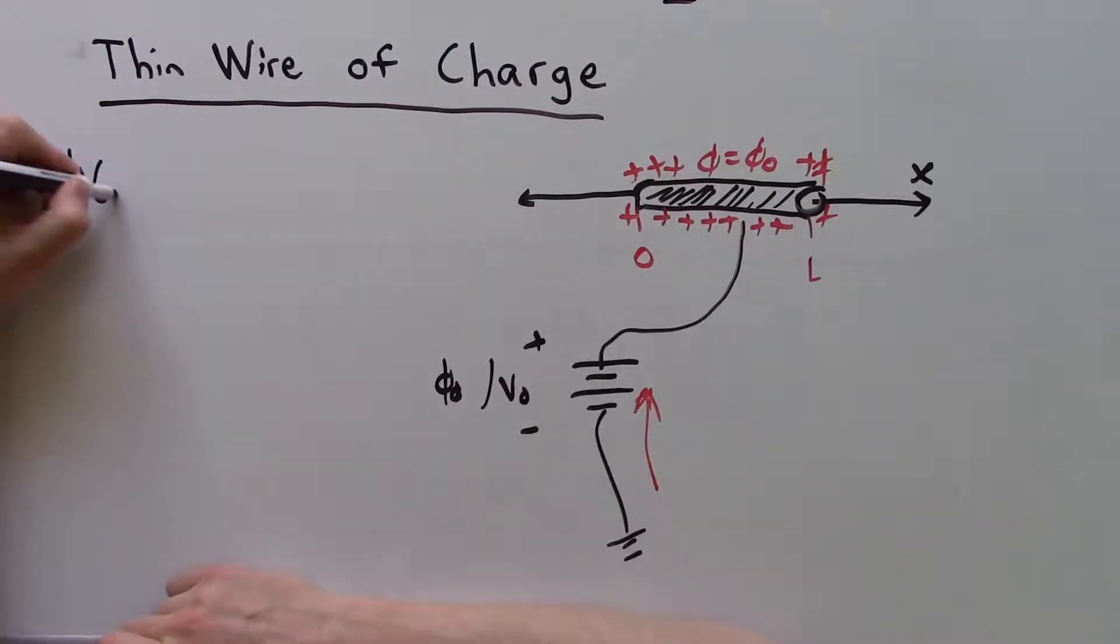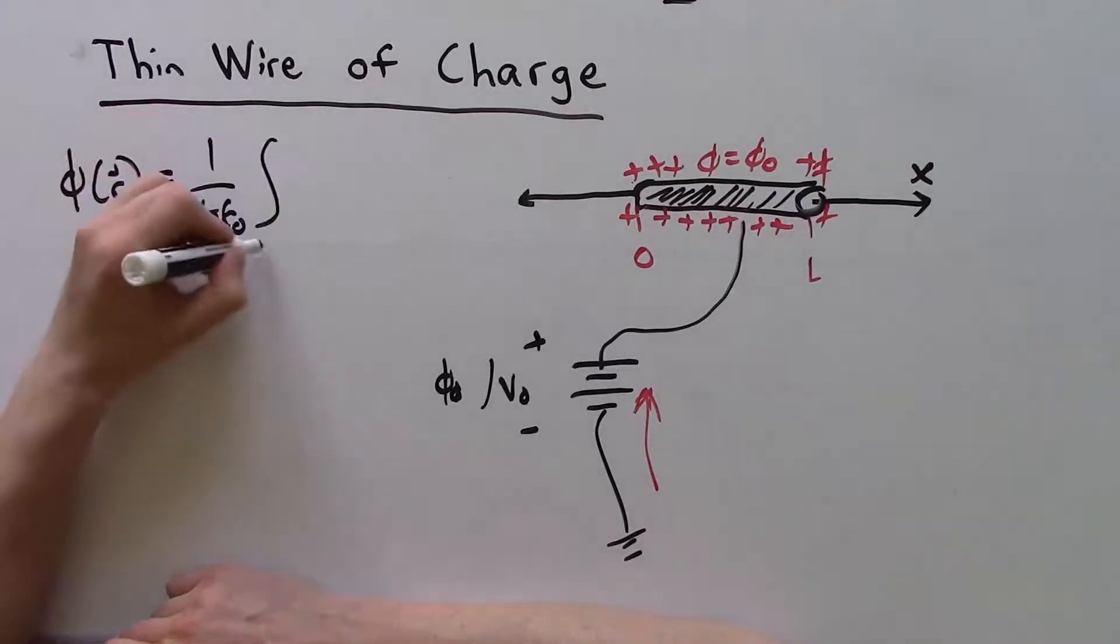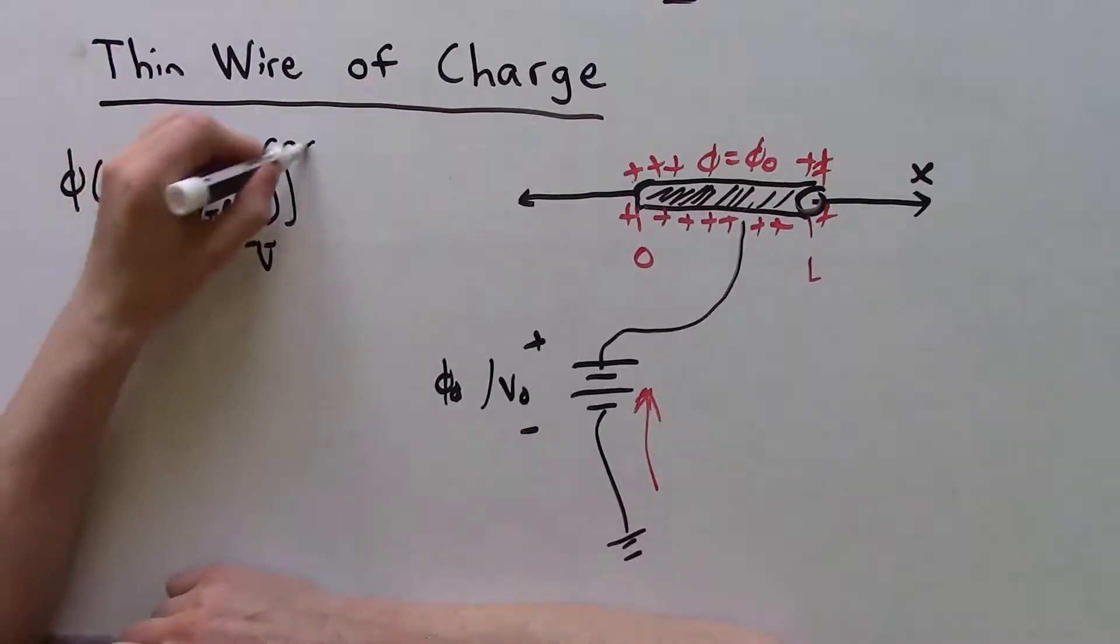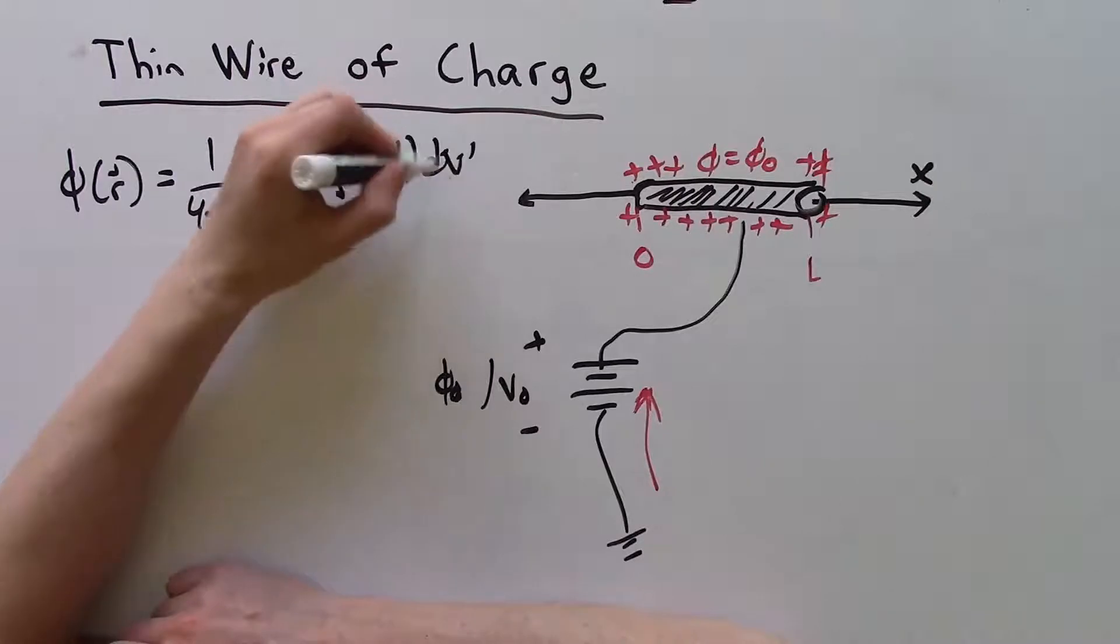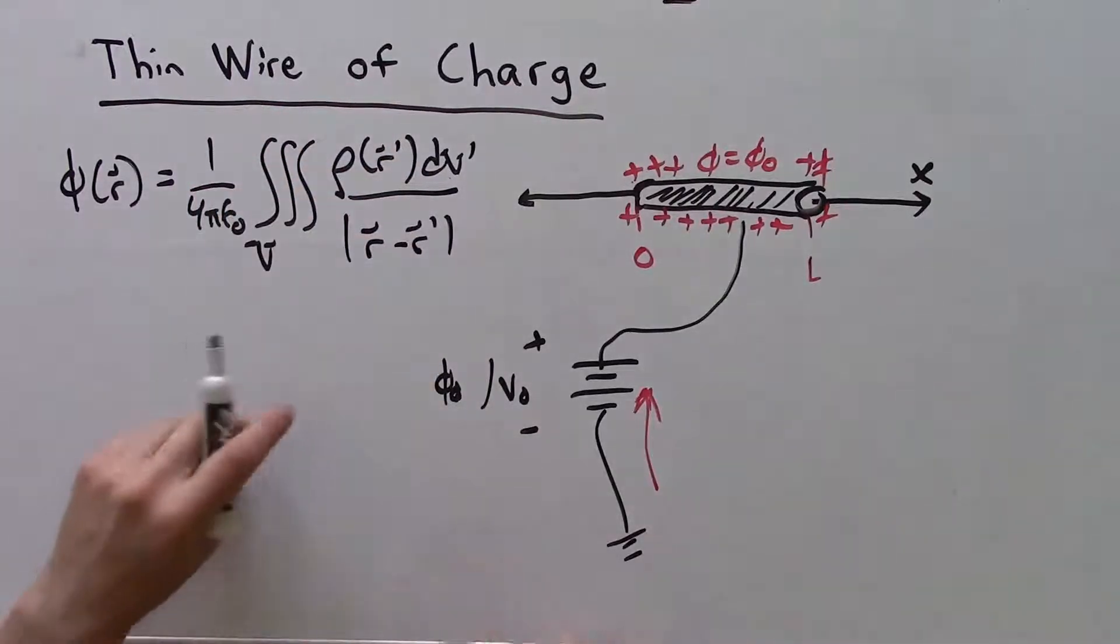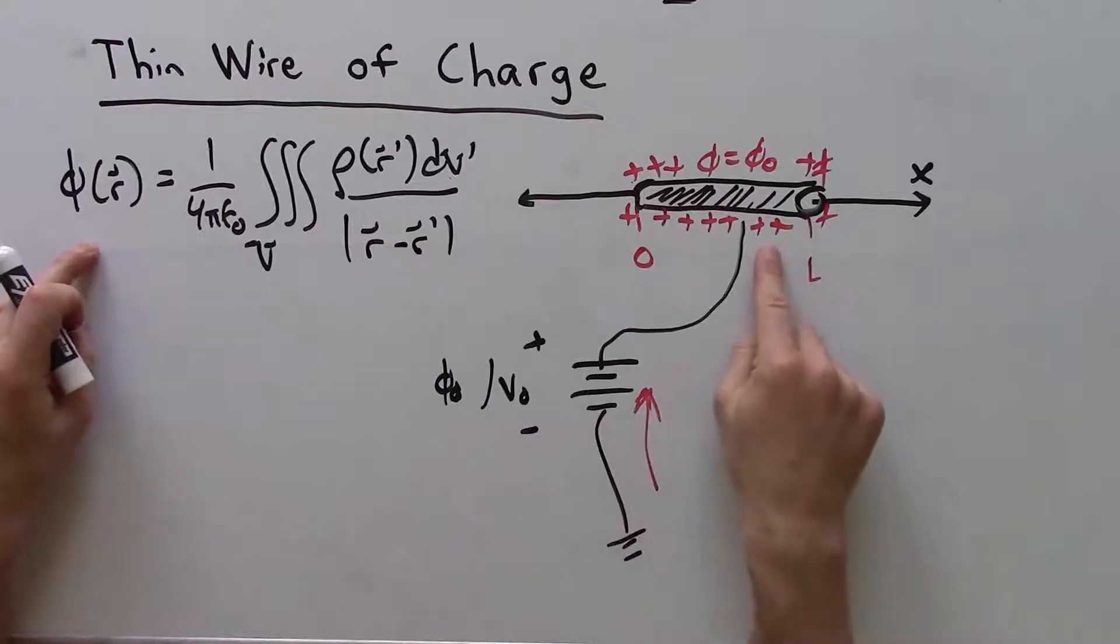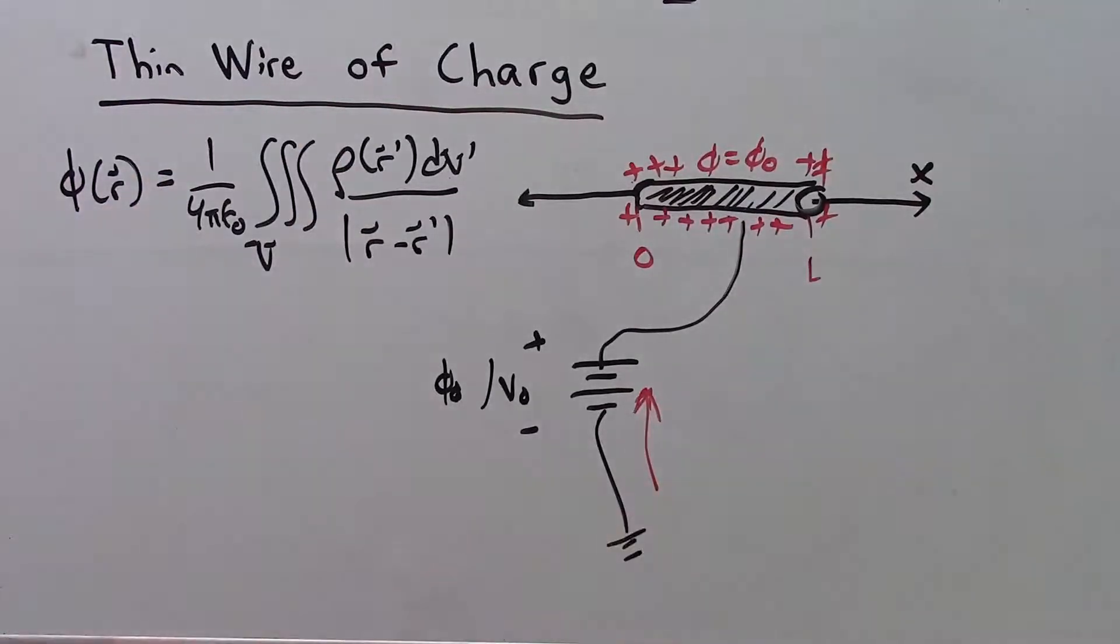We'll have φ(r). This will be given. We'll have 1 over 4π ε₀, then that volume integral: ρ(r') dV' over |r - r'|. This will be known across the volume, but I now want to calculate this thing here.